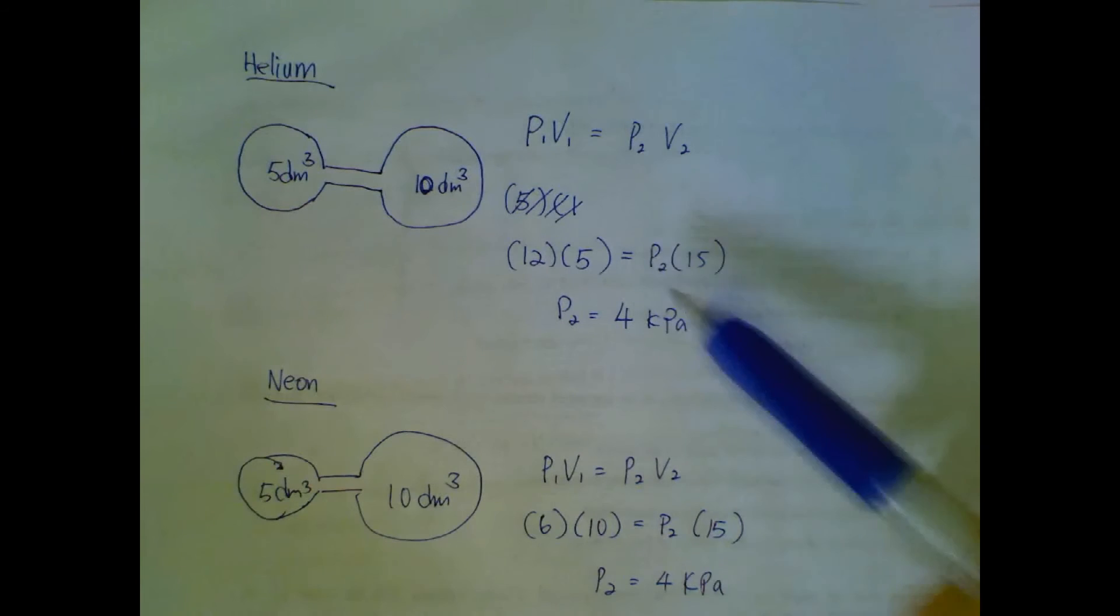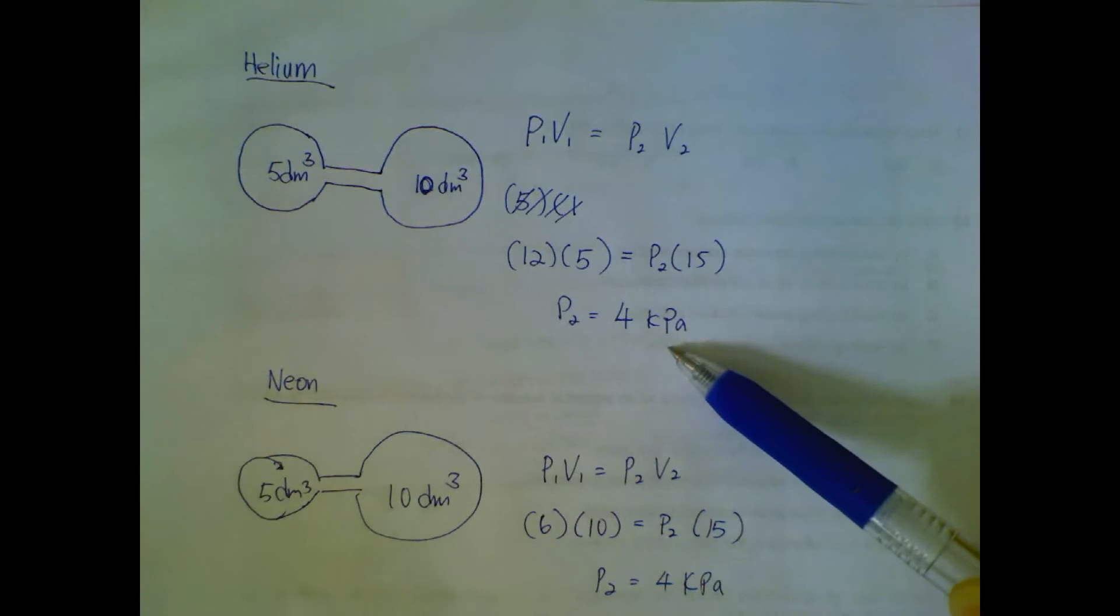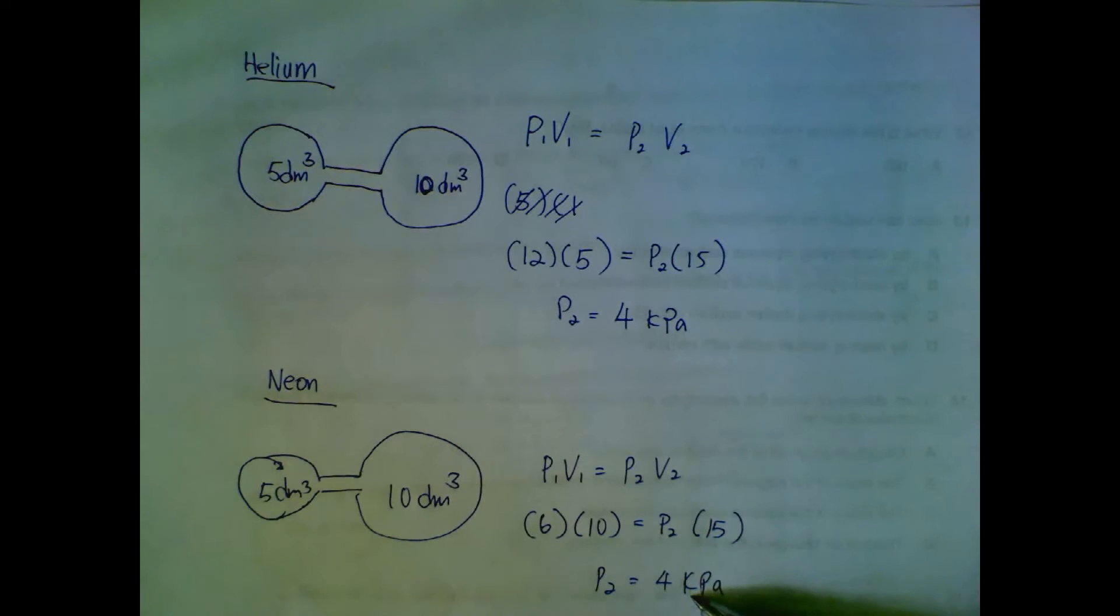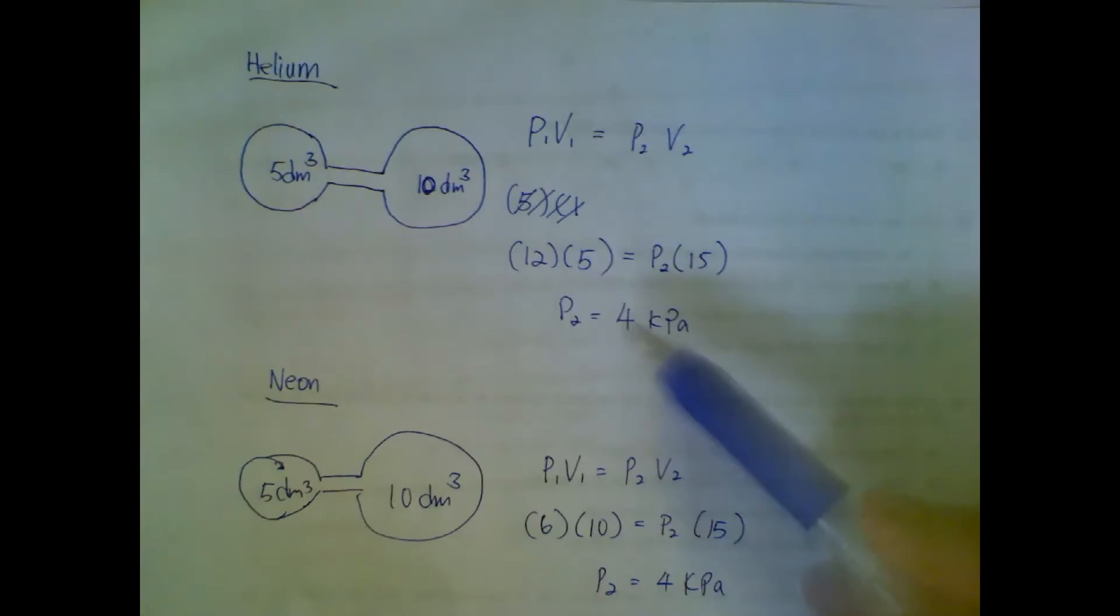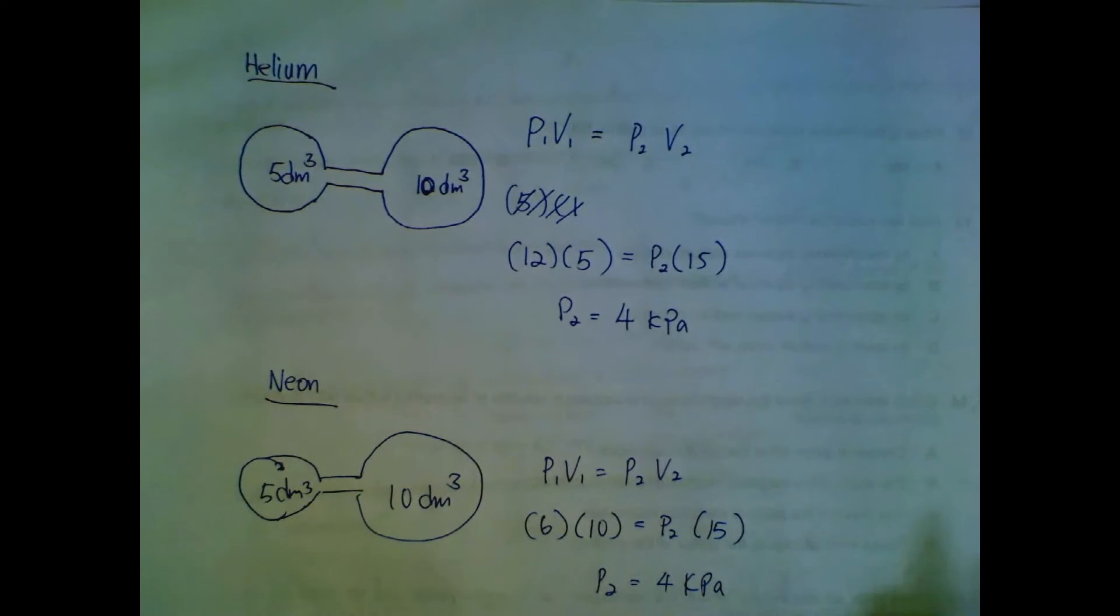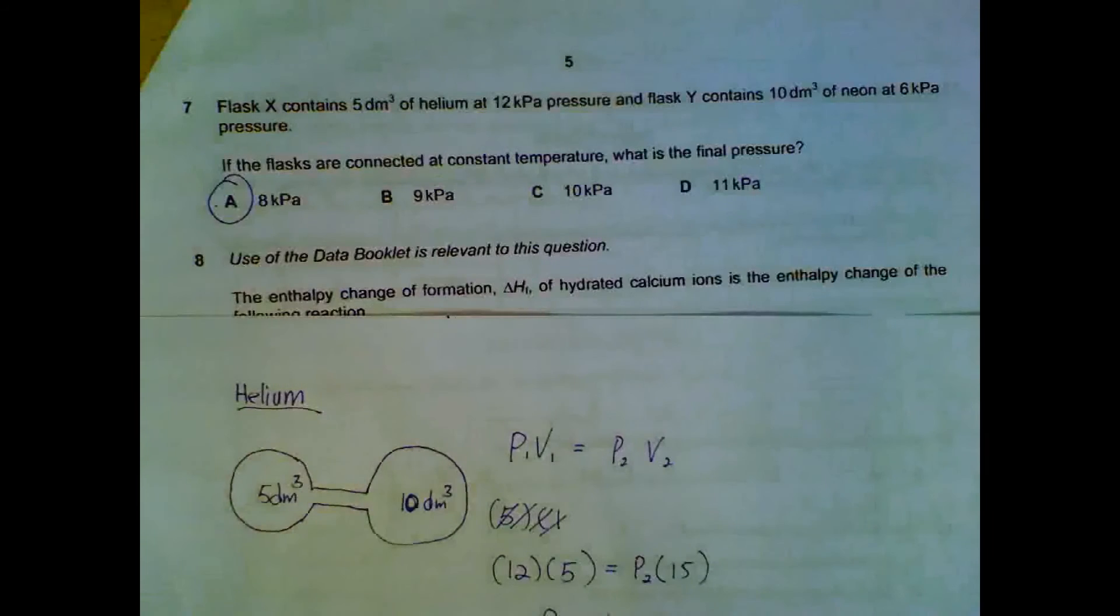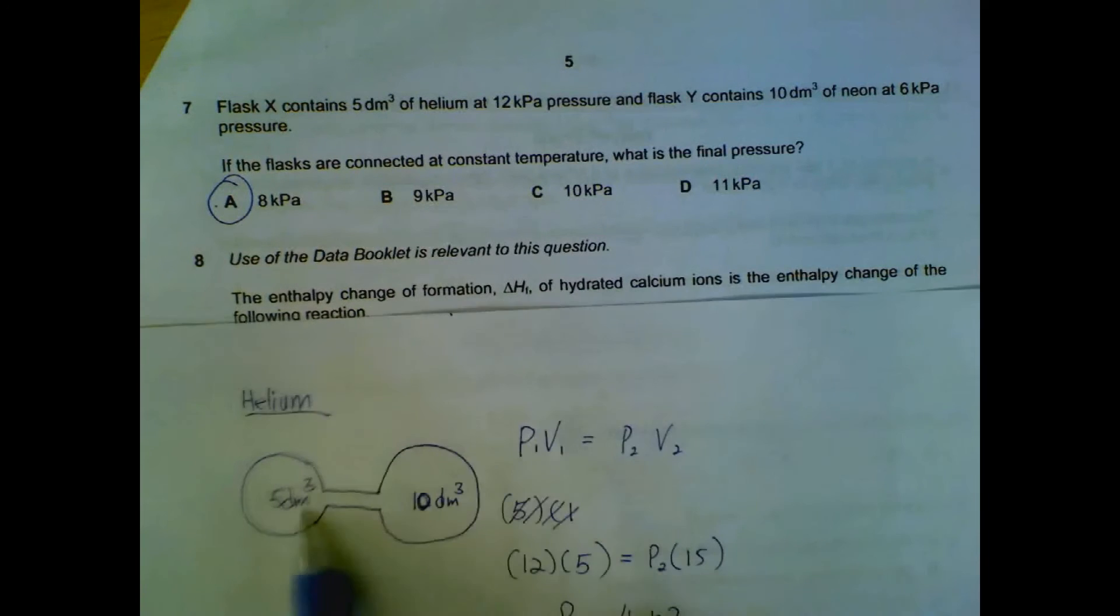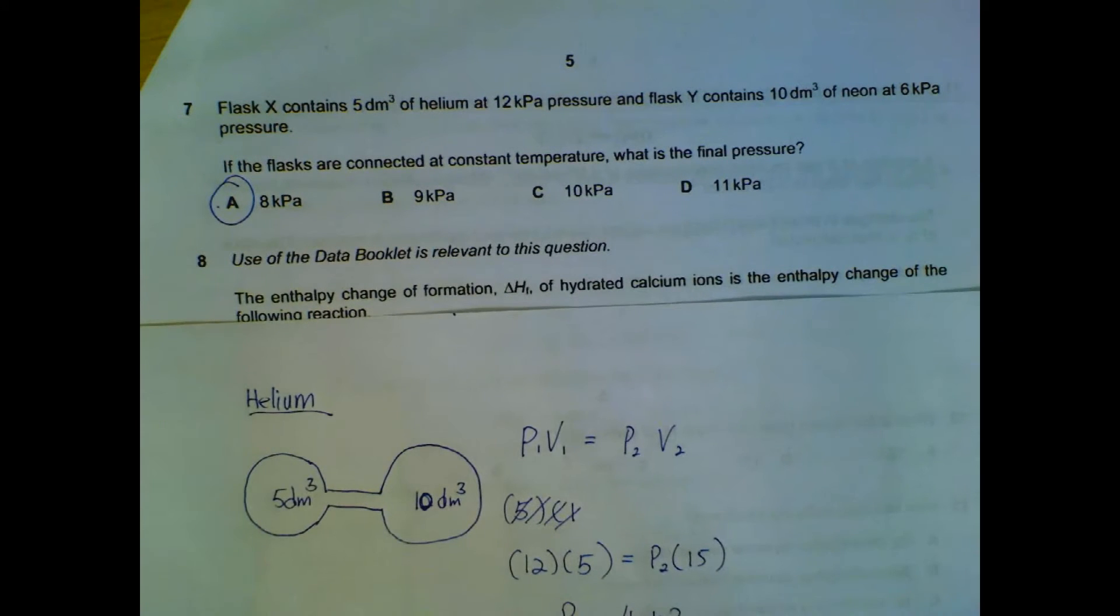So we have helium exerting 4 kilopascals, we have neon exerting 4 kilopascals, the total we just sum them up, we will have a total of 8 kilopascals. So work on each gas on their own and then sum them up.